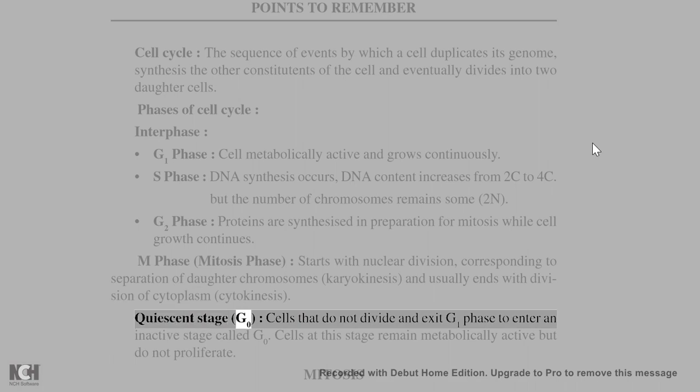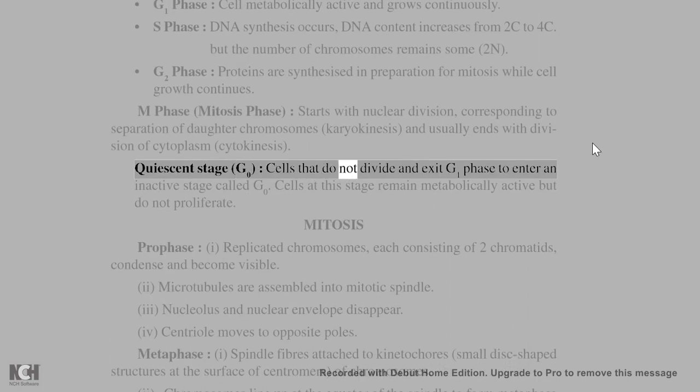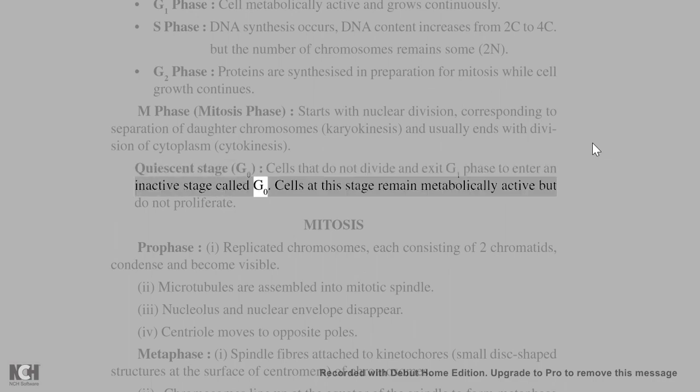Quiescent stage (G0): Cells that do not divide exit G1 phase to enter an inactive stage called G0. Cells at this stage remain metabolically active but do not proliferate.